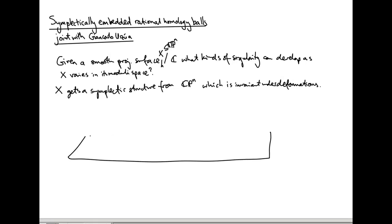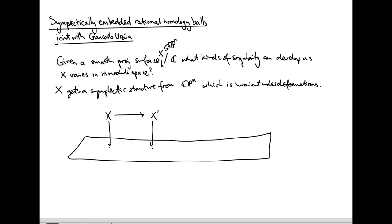Over the moduli space, different points correspond to varieties. Here's X, here's some other X′, another smooth variety in the same moduli space. There's a diffeomorphism from X to X′ called symplectic parallel transport, which identifies the symplectic form on X with the symplectic form on X′.